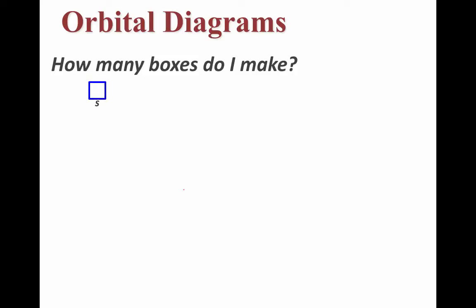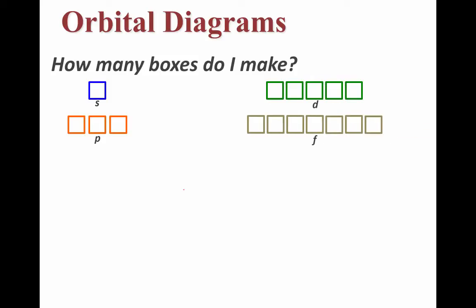Well, it depends. If you're trying to represent an s sublevel, you should have one box drawn and labeled. If you're trying to represent a p sublevel, you should draw three boxes. A d sublevel would have five boxes, and you probably already know how many an f sublevel has. That's right, seven boxes for the f sublevel.